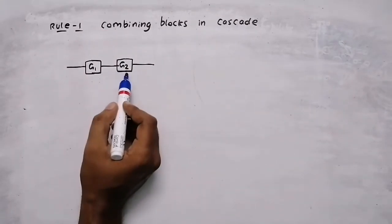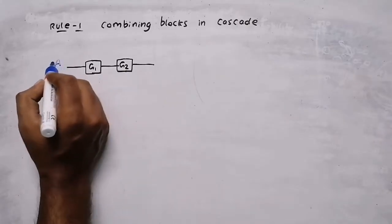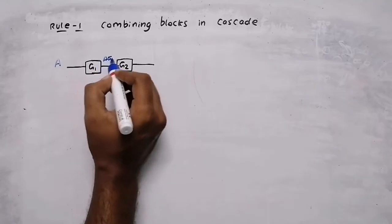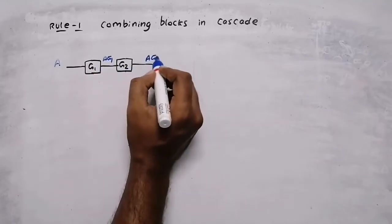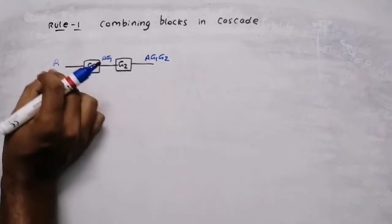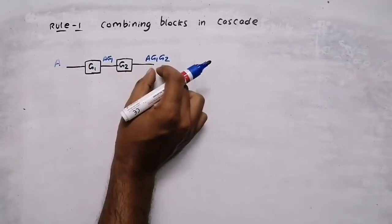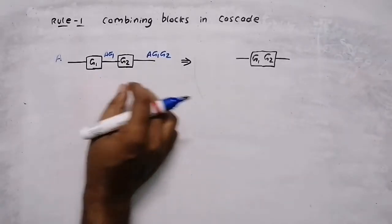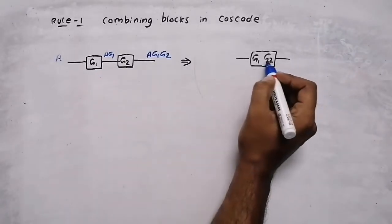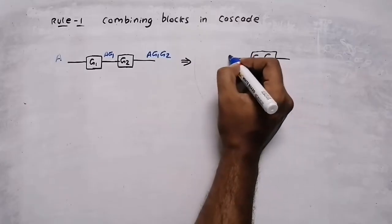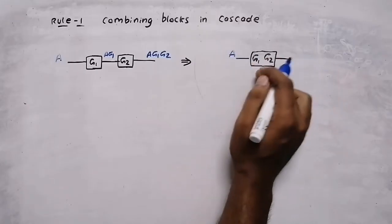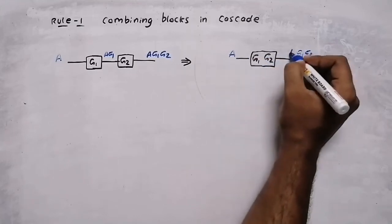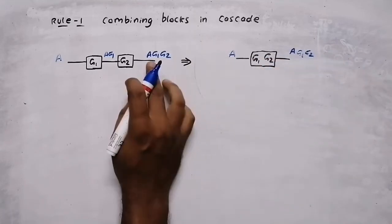If two blocks are in series, suppose I give an input A, then A multiplied by G1 gives A·G1, and then A·G1 multiplied by G2 gives A·G1·G2. So when I give an input A, my output is A·G1·G2. If two blocks are in series, we can combine them by multiplying. Giving the same input A, I get A multiplied by the single block G1·G2, giving A·G1·G2 — the same output.